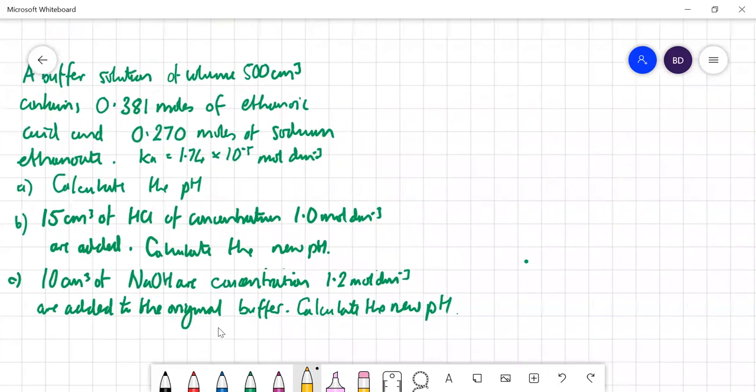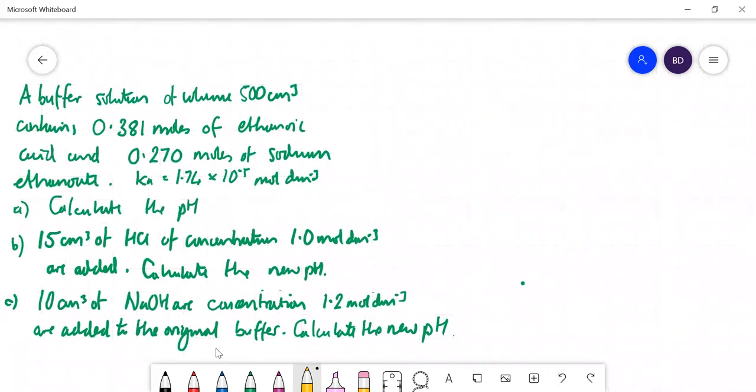A buffer solution of volume 500 centimeters cubed contains this many moles of ethanoic acid, so that's HA, and this many moles of sodium ethanoate. First of all, just calculate the pH.